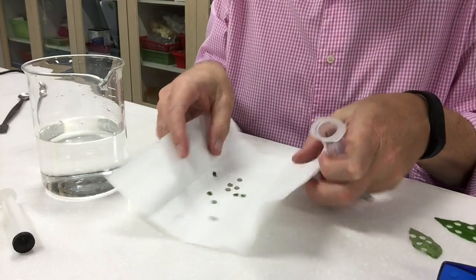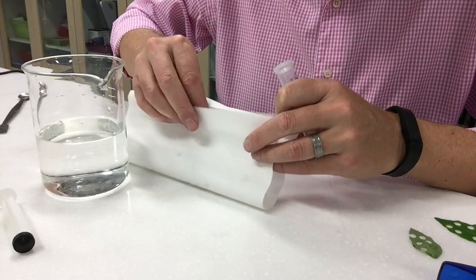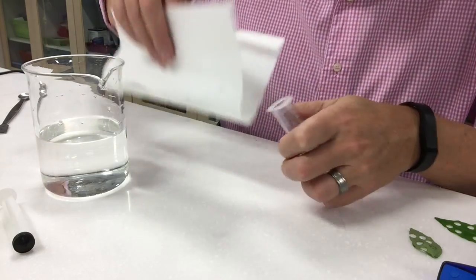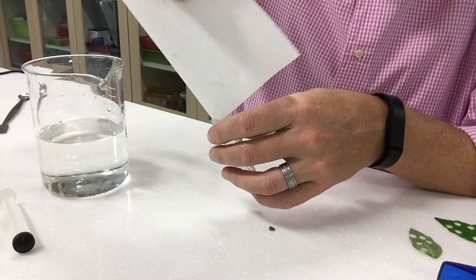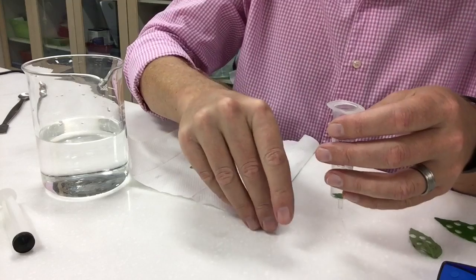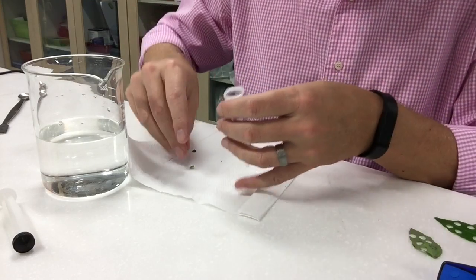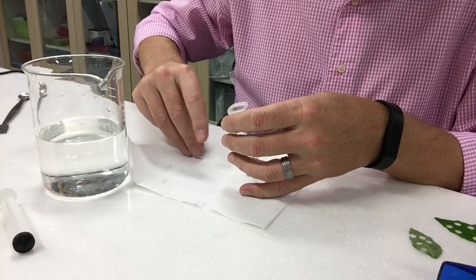So the first thing you need to do is you need to put your leaf discs into the syringe. So you want to try and get those down in there and drop one there. Carefully try and pick those up and pop them in. So I've got about 10 of them in there.